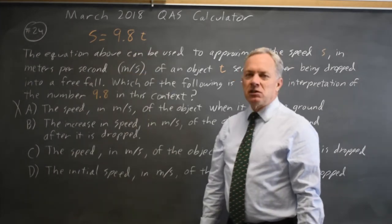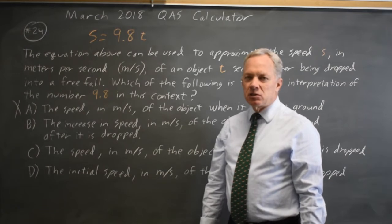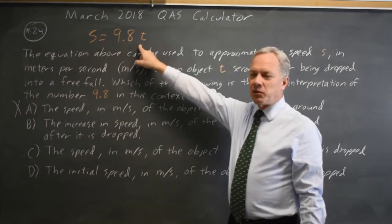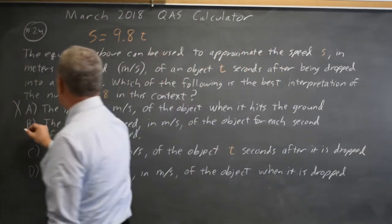So the slope of this line, 9.8, is the amount that speed increases for each unit increase in time. That would be choice B.